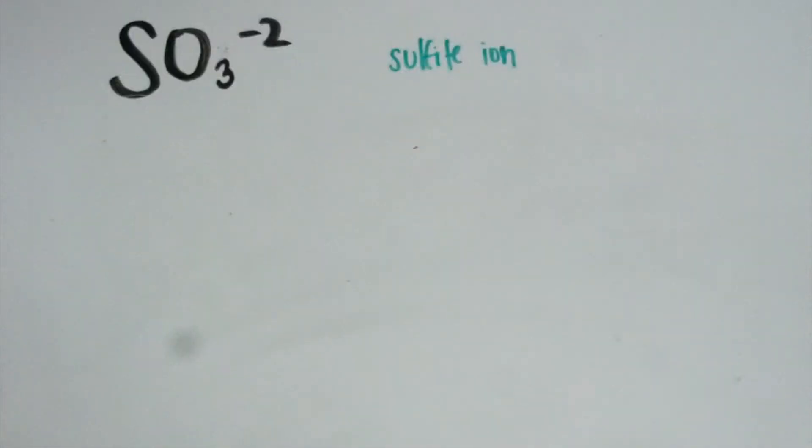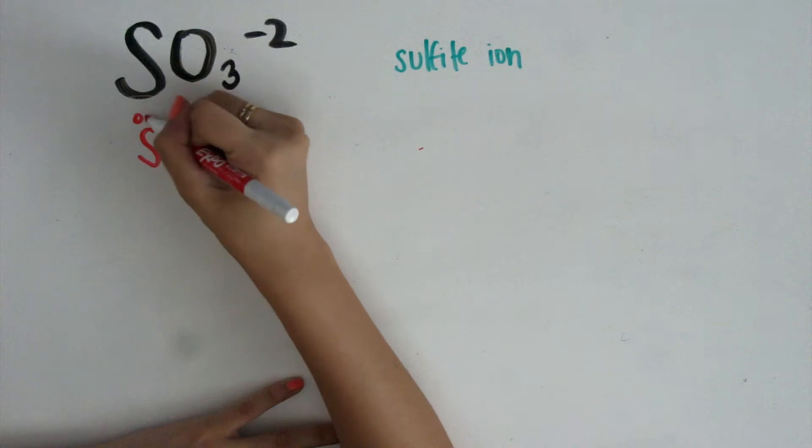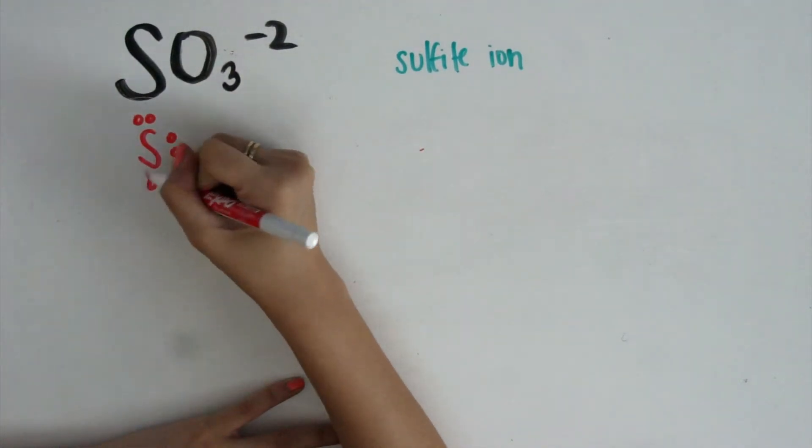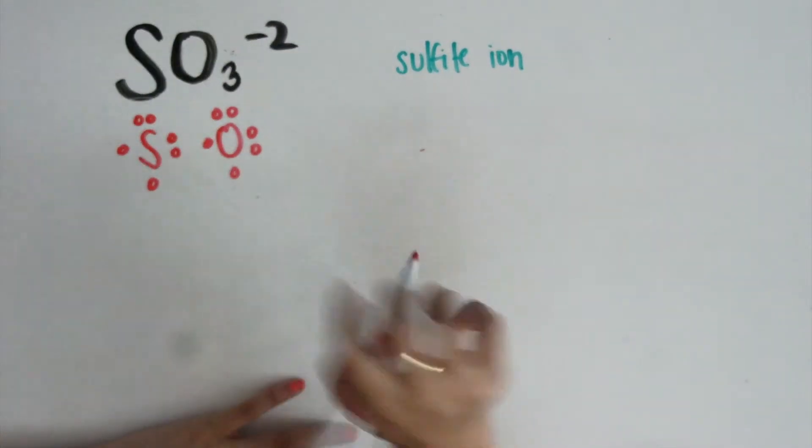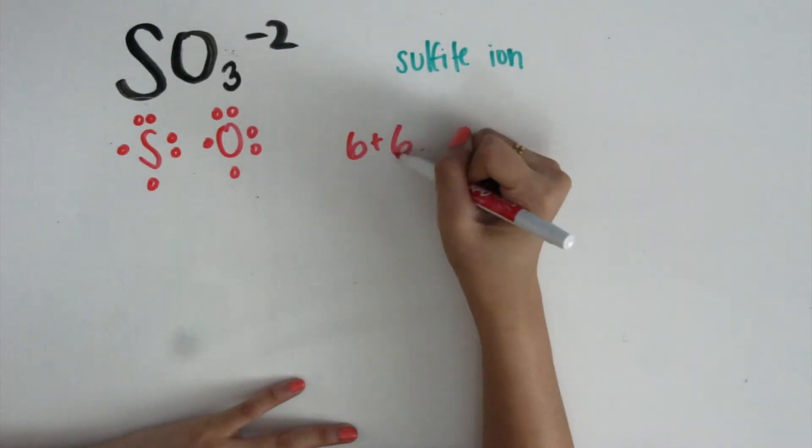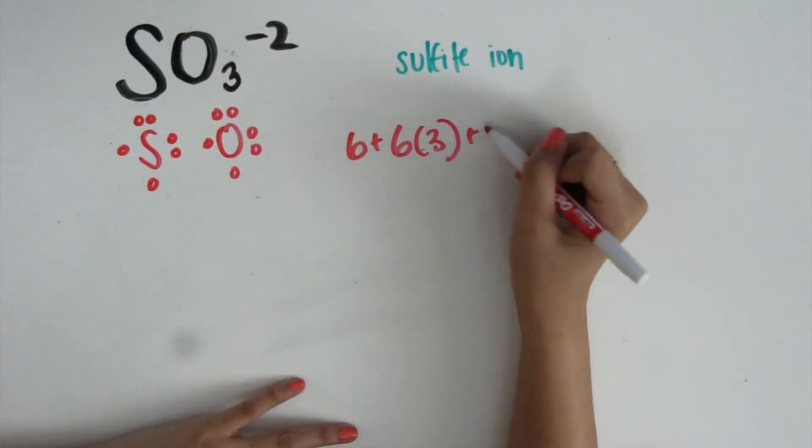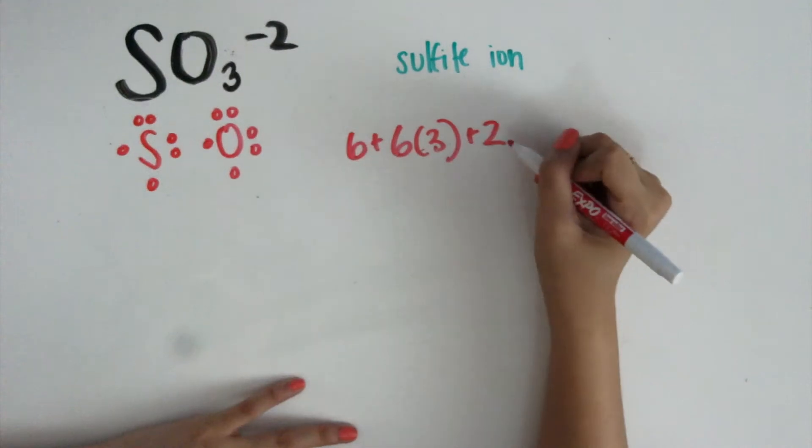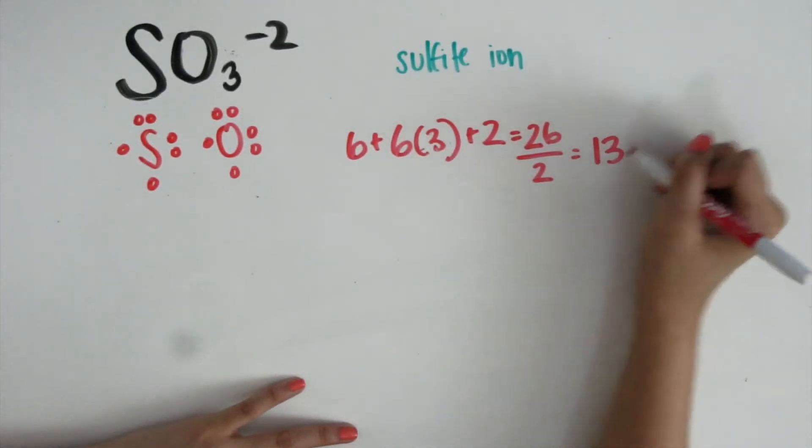In our second example, we have a sulfite ion. We'll begin with our valence electrons. Sulfur has 6 valence electrons. Oxygen has 6 electrons as well. We add these together for our bonds. 6 plus 6 times 3 because there are 3 oxygen atoms. Plus 2 because of the charge. This equals 26. Divide this by 2 and you'll get 13 pairs.